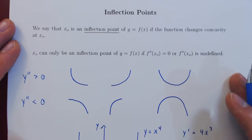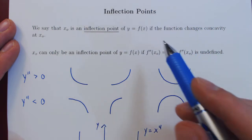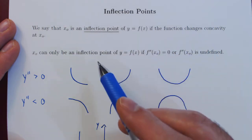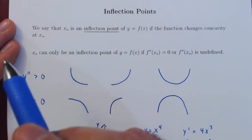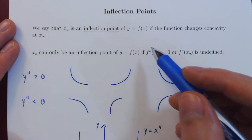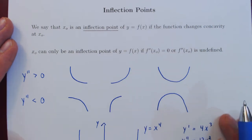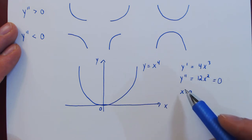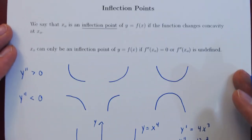To summarize: an inflection point is a point at which the function changes concavity, going from concave up to concave down or concave down to concave up. A point x0 can only be an inflection point if the second derivative of the function at this point is 0 or is undefined. And such a point — where the second derivative is 0 or undefined — is not necessarily an inflection point.